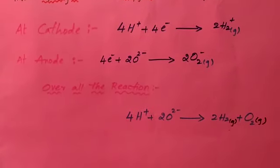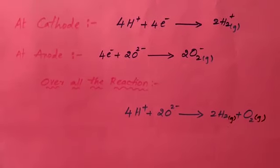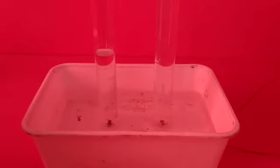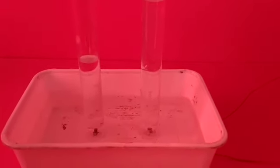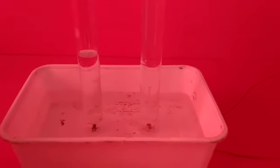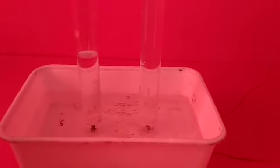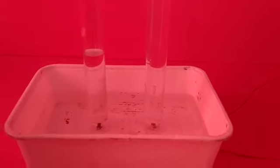The cathode is negatively charged and the anode is positively charged. The left side is anode and right side is cathode. At the anode, the oxygen gas is released.